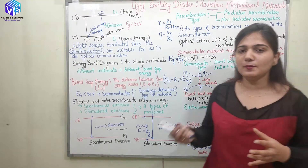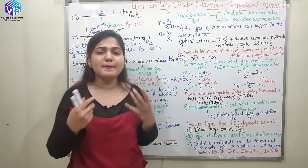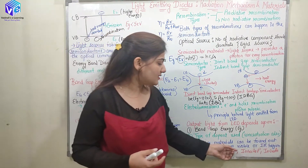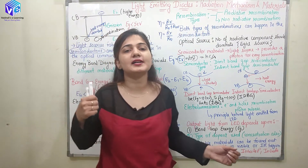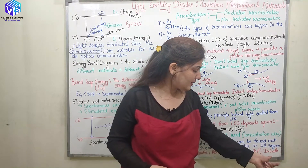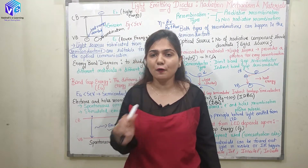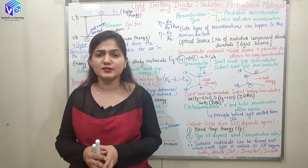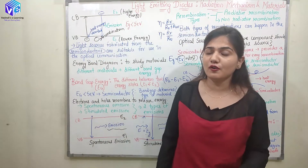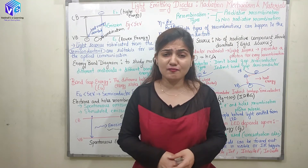The output light also depends on the type and concentration of dopants used. The semiconductor LED is made of a p-n junction, and the type and amount of dopant changes the type of photons released. Suitable materials can be found in which light is emitted in the visible or infrared region. Materials include gallium arsenide, aluminium gallium arsenide, indium phosphide, indium gallium arsenide phosphide, and indium gallium arsenide. If you have any doubts, please comment below. Please like, subscribe, and share the video.